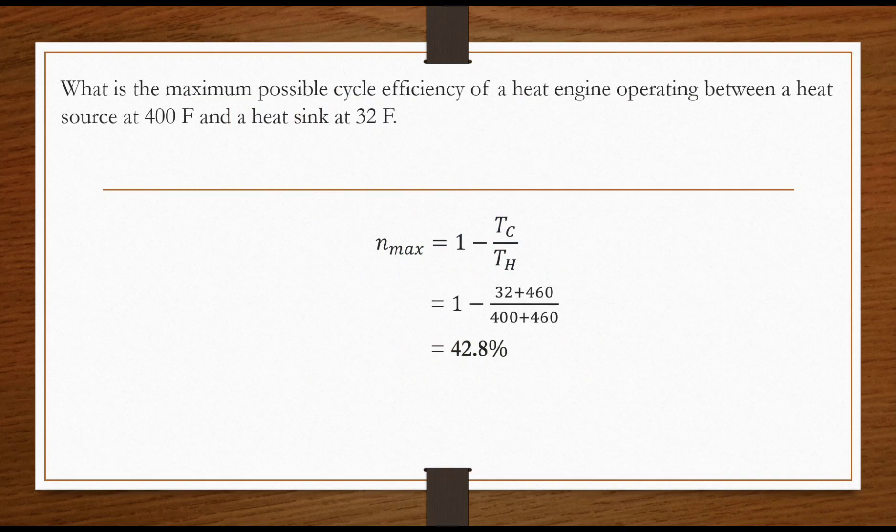What is the maximum possible cycle efficiency of a heat engine operating between a heat source at 400 Fahrenheit and a heat sink at 32 Fahrenheit?